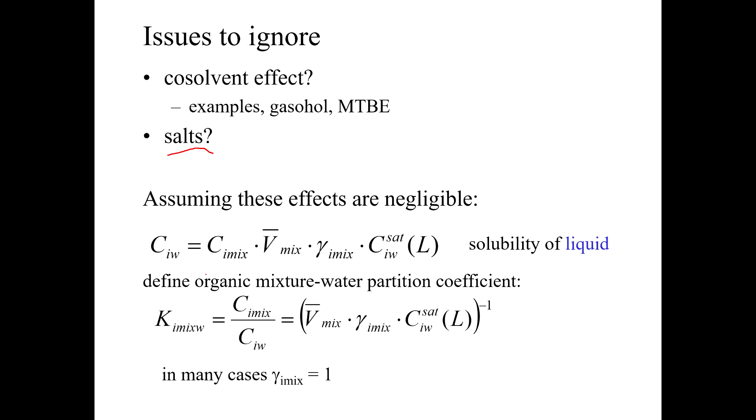So if we assume that these are negligible, then the concentration in the water phase at equilibrium would be equal to the concentration of the chemical in its mixture times the molar volume of the mixture times the activity coefficient of the compound in the mixture times its hypothetical maximum solubility. So this is sort of the maximum solubility of the compound in water here, C_sat.